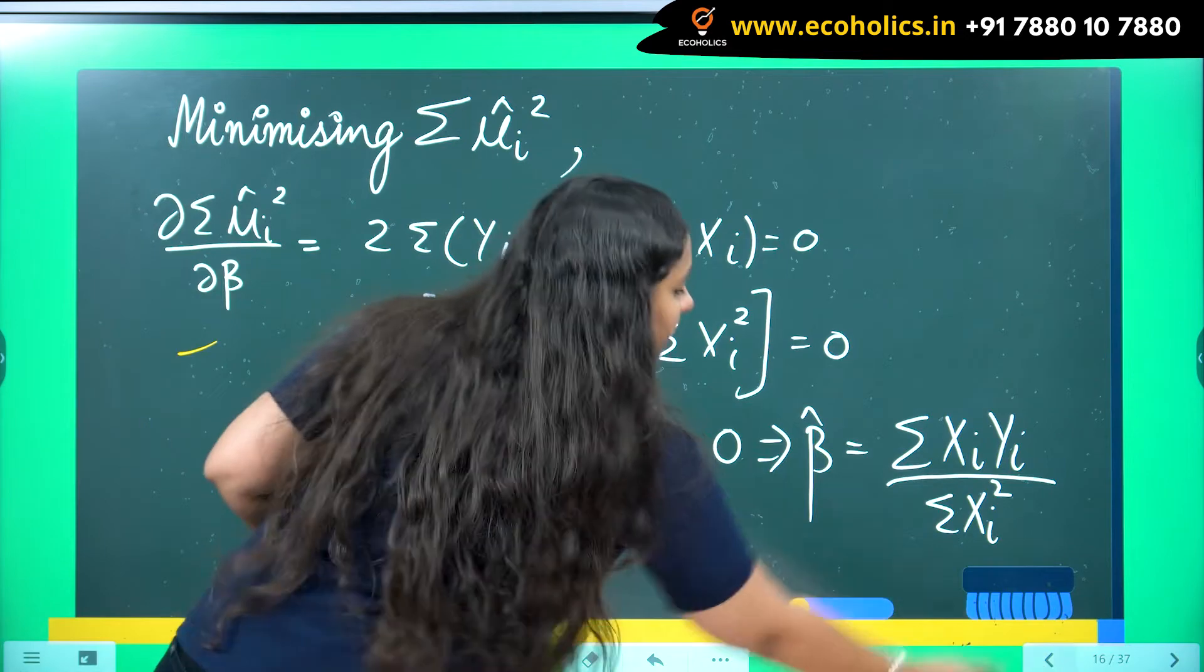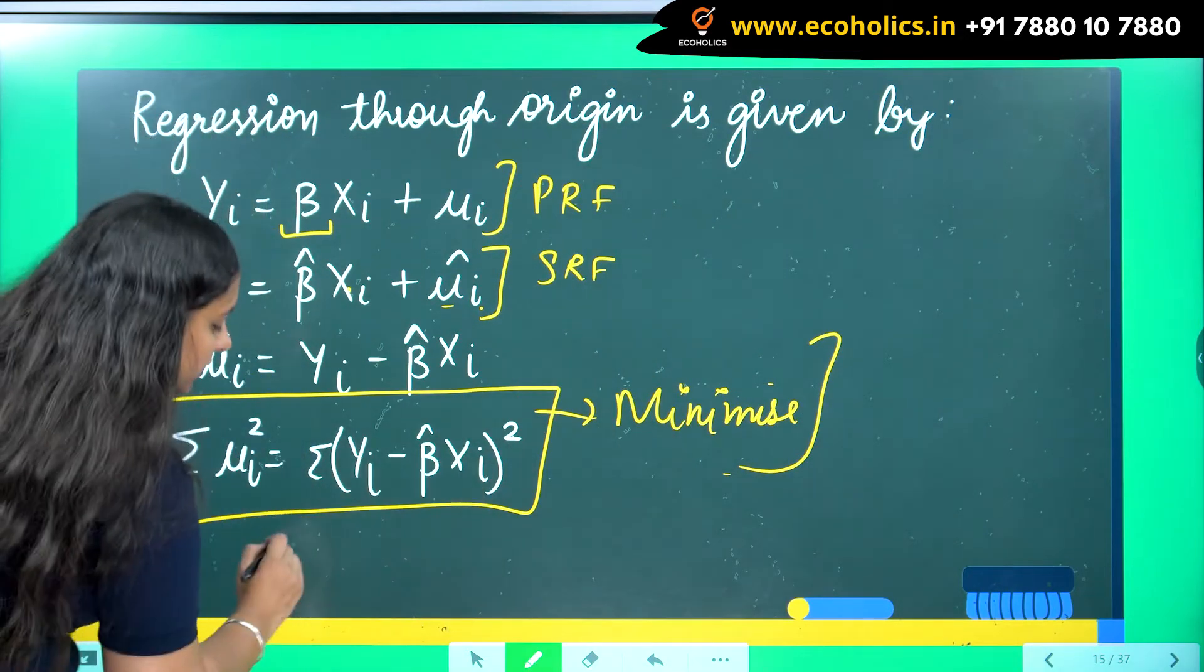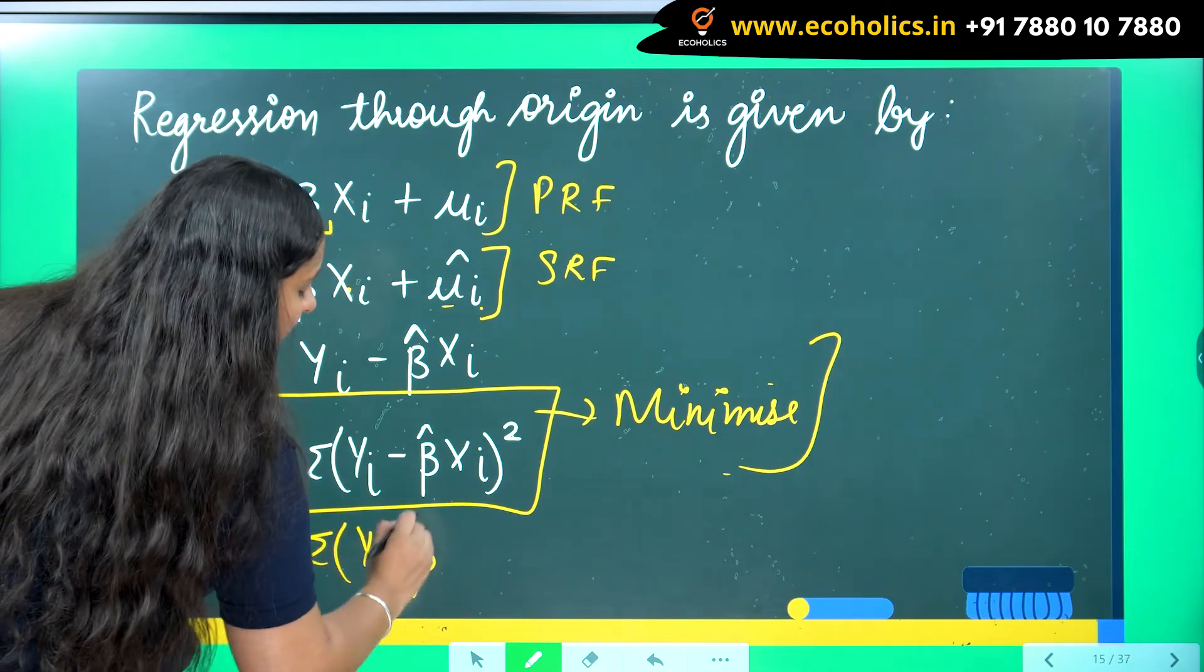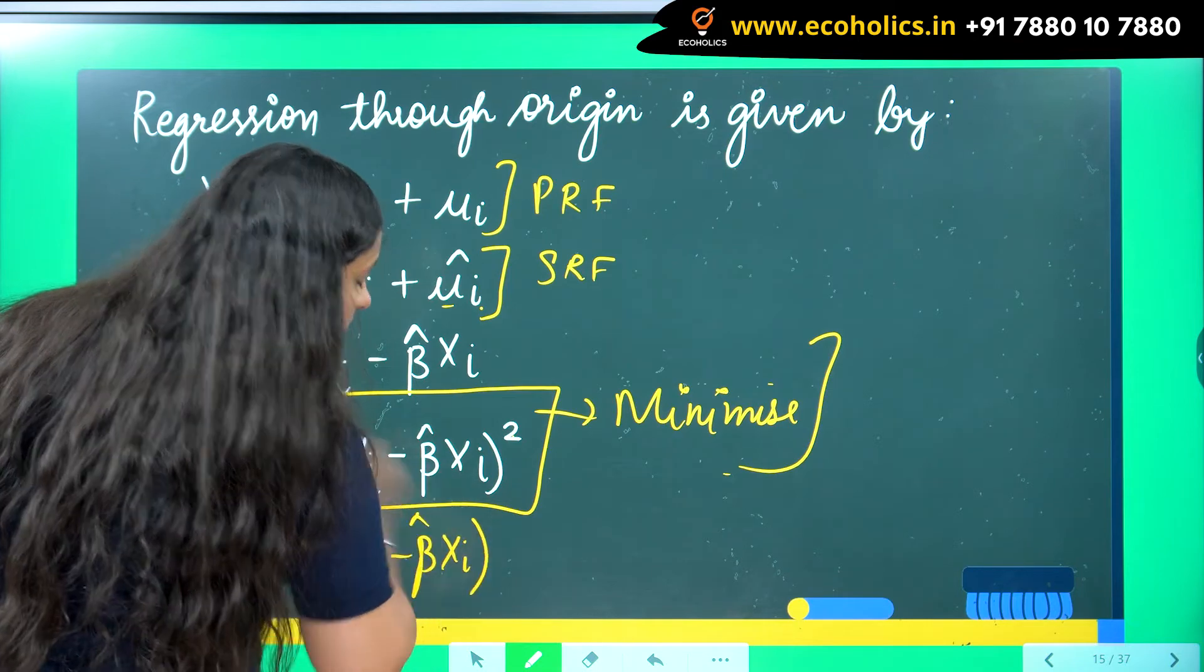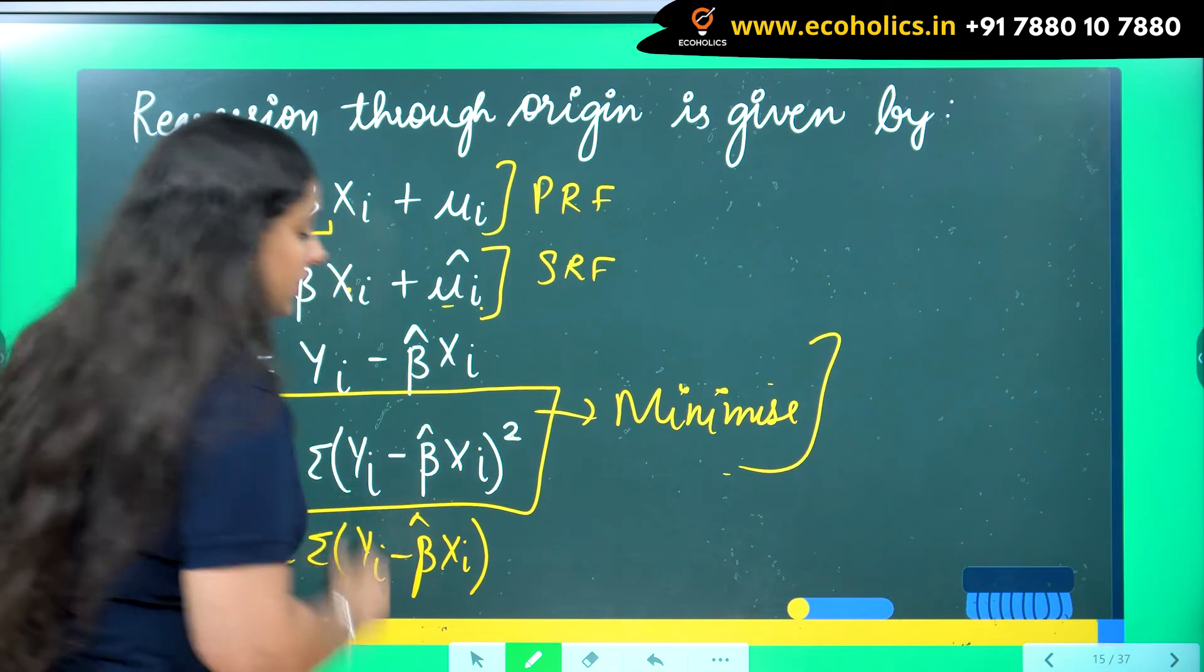Here I have to find out the value for beta. I will be minimizing with respect to beta. So when I minimize it, I will do its derivative with respect to beta. 2 will come in front, summation this whole thing. Now one power will be left here.